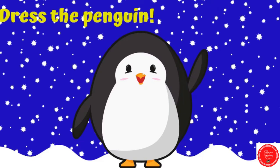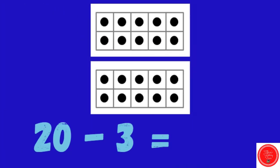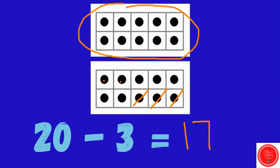Let's dress the penguin. Here are some problems for you to practice on your own. 20 minus 3. We need to cross out 3. Go ahead and count how many are left. 17! Great. I hope you counted the quick way: 10, 11, 12, 13, 14, 15, 16, 17.